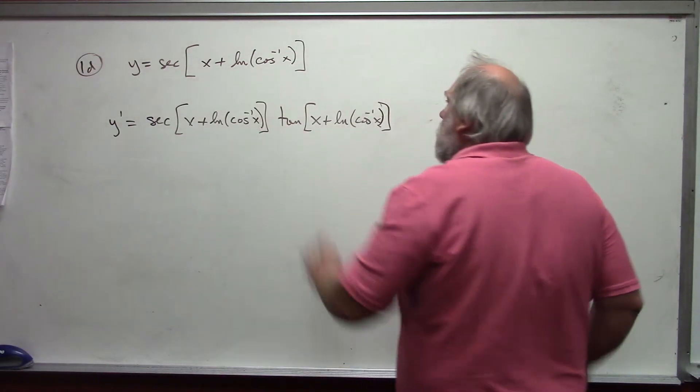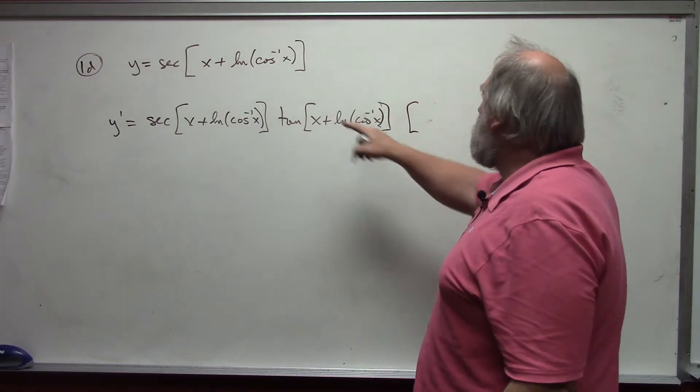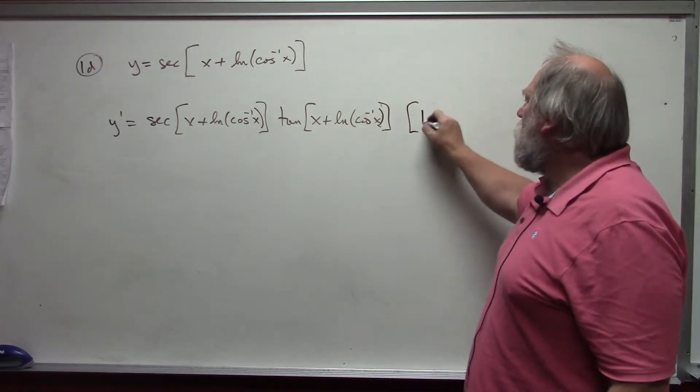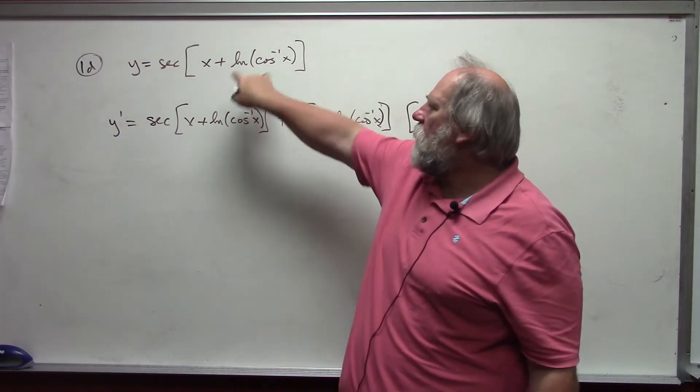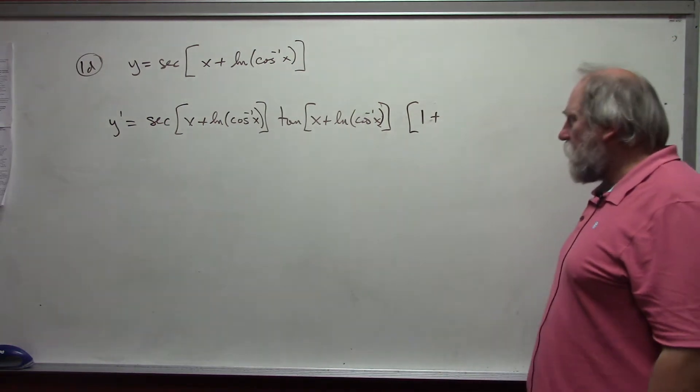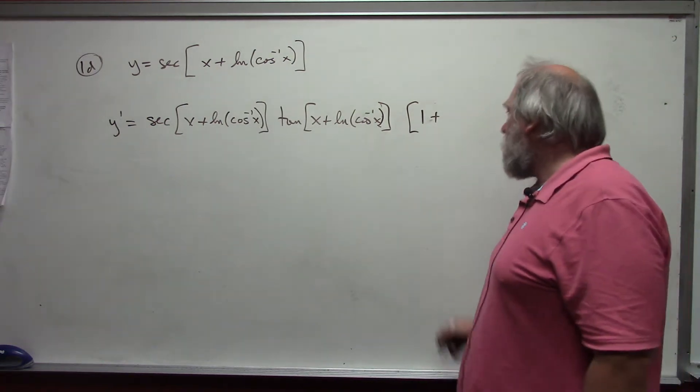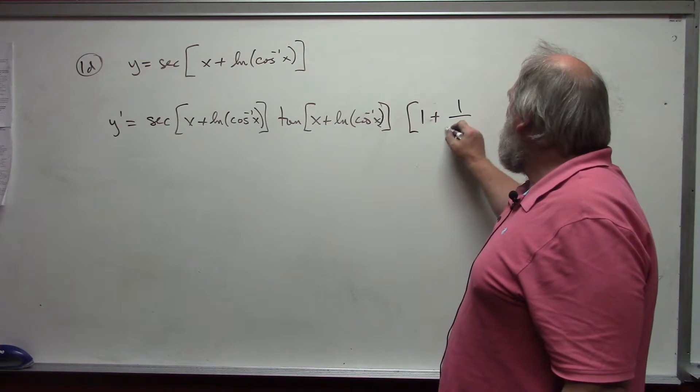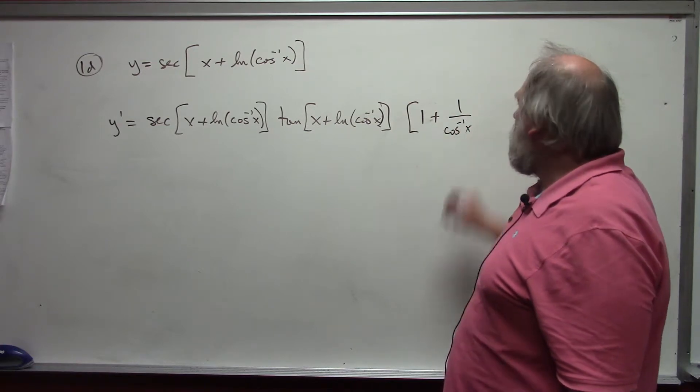And on the inside here, I have a sum. So, I take the derivative of each piece separately. One plus. Now, I have a composition again. The derivative of the natural log of arc cosine would be 1 over arc cosine of x. Remember, that is not.